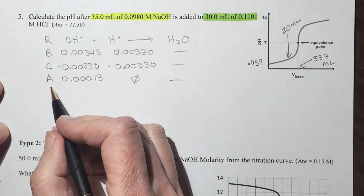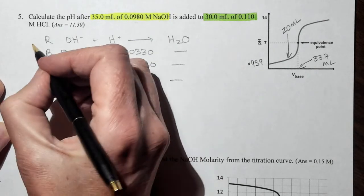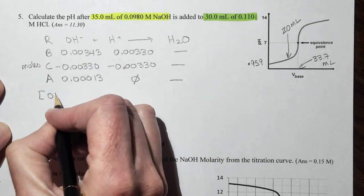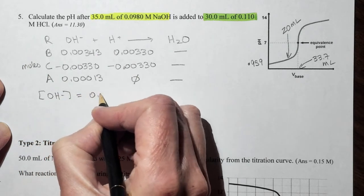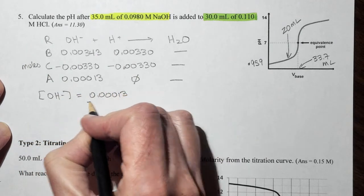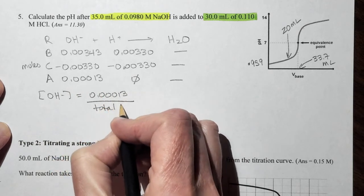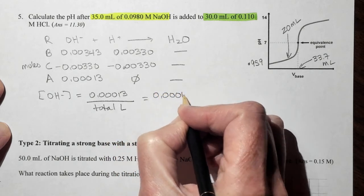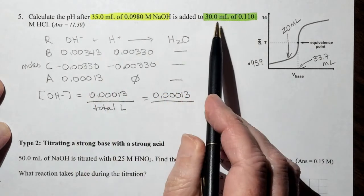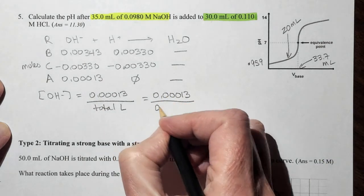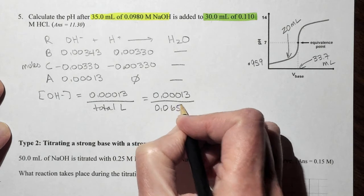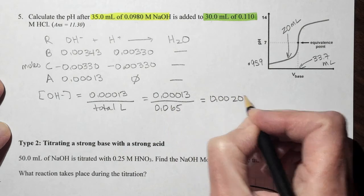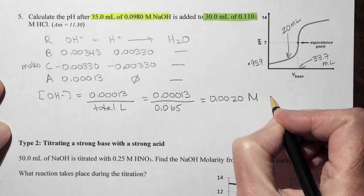Alright, here's the BCA table. And so we have our final moles of hydroxide. Remember that these are moles. So our hydroxide ion concentration will be equal to 0.00013. And remember that this needs to be over the total liters. So this is going to be 0.00013 over 35 plus 30 mLs. Convert that to liters. And it's 0.065 liters, which equals 0.0020 molar. And this is hydroxide ion.